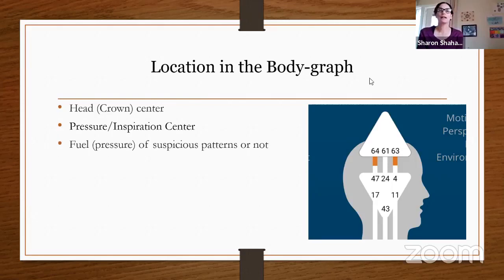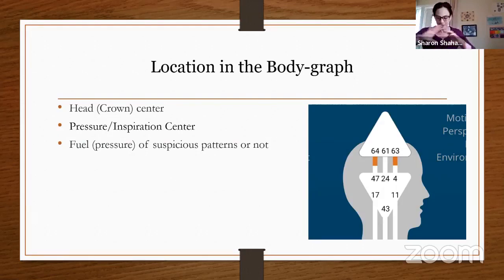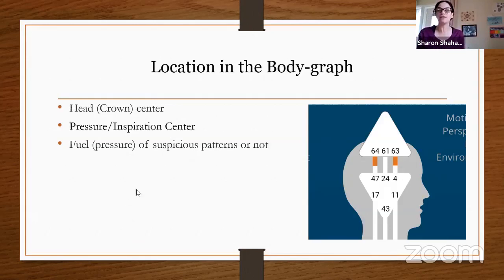Gate 63 is a fuel or pressure of suspicious patterns — or not. It's there to recognize and start a process of looking at a pattern. That is the gist of the logical process: looking at patterns and deciding if the pattern is suspicious or not. Do you doubt the pattern or not?